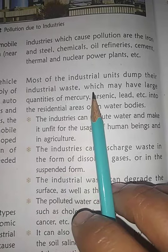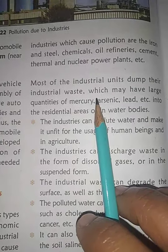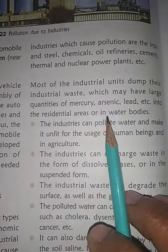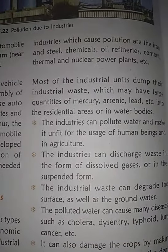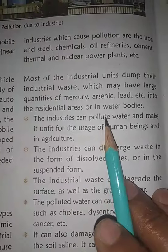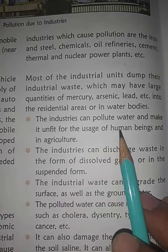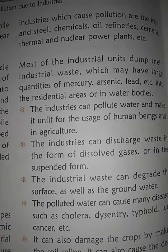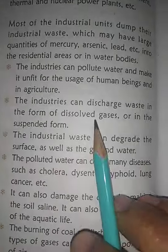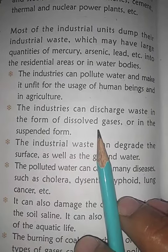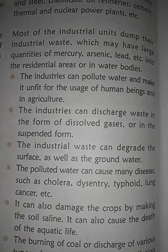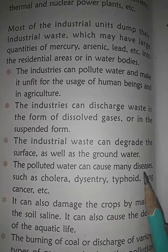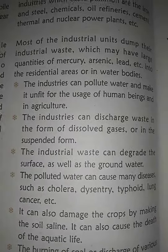Most industrial dumps discharge out of the industry mercury, arsenic, and lead, which are left in residential areas or in water bodies. Industries pollute water making it unfit for human use and agriculture. Industries can discharge waste in the form of dissolved gases or in suspended form, and industrial waste degrades both surface water and groundwater.